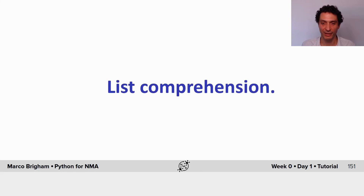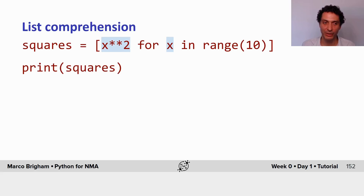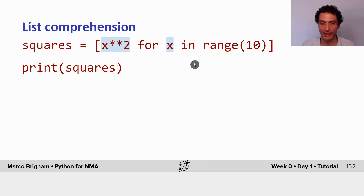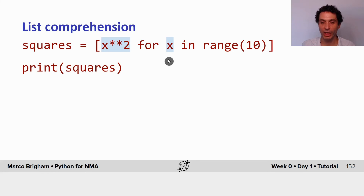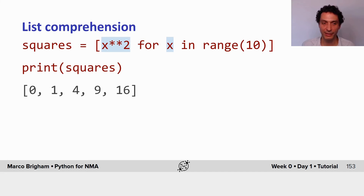List comprehensions are very useful because they can make code clearer and easier to read. You define a list comprehension using square brackets with your for loop inside. Here we are looping variable x in range 10, so from 0 to 9, and each time we square the value of x. The result is a list where the first element at index 0 is 0, the square of 1 is 1, the square of 2 is 4, and so forth.